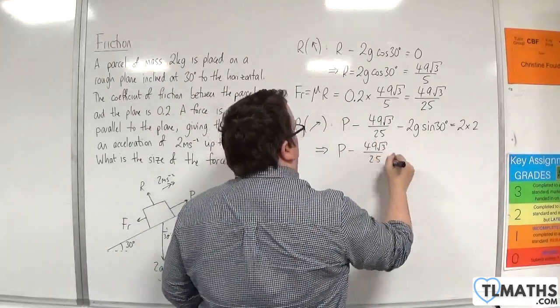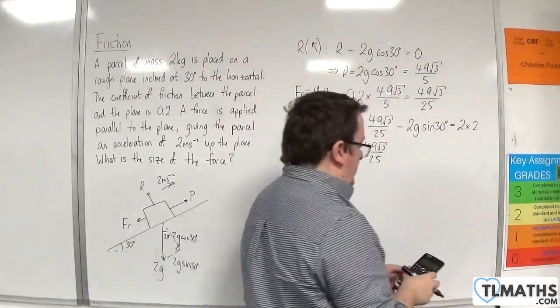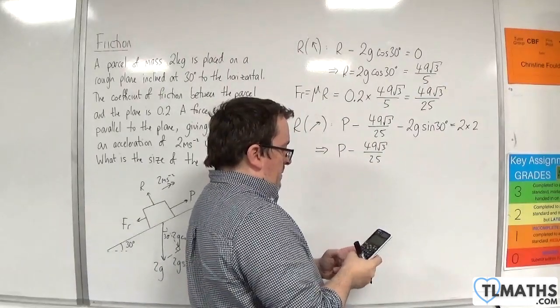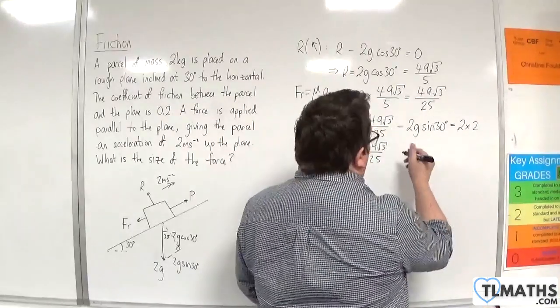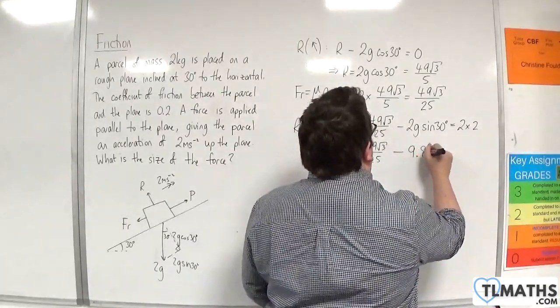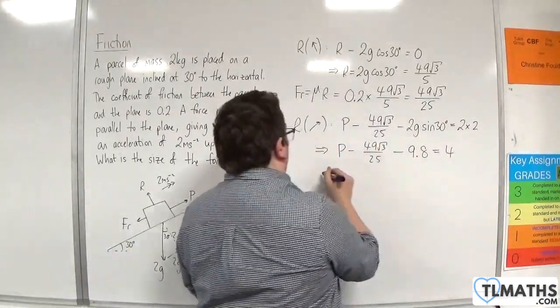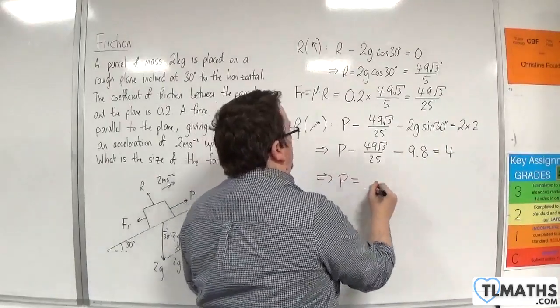Now, 2g sin 30: 2 times 9.8 times sin 30 is, of course, 9.8. So that's that, and that's 4. So that gives me enough information to find P now.